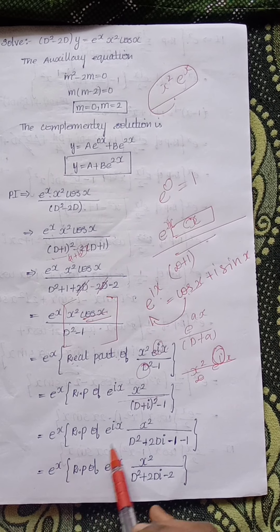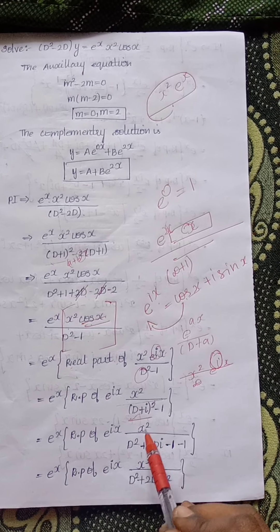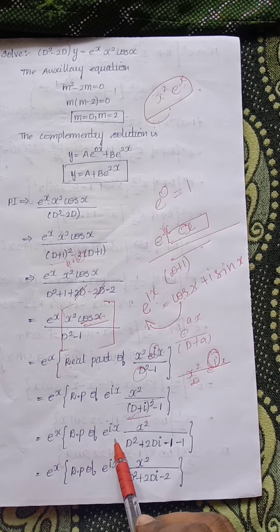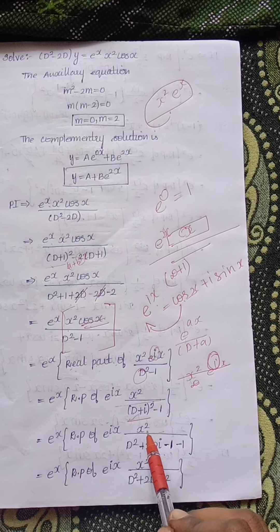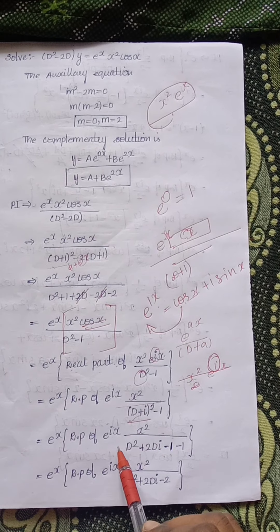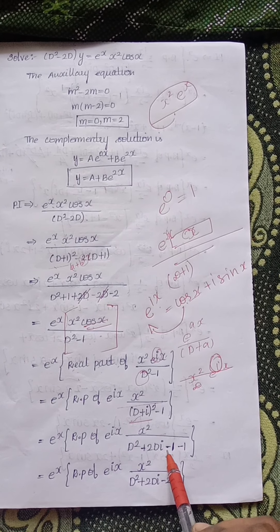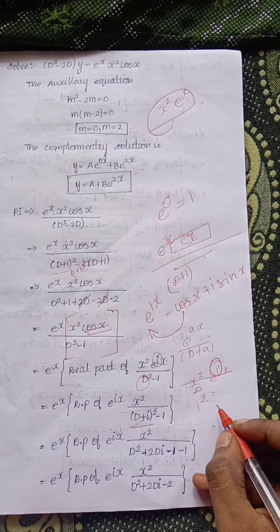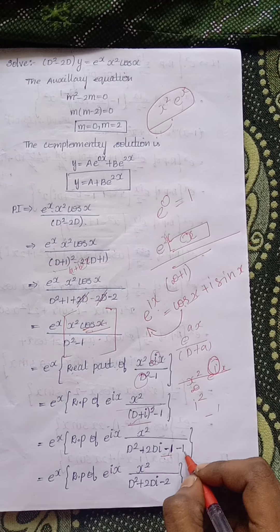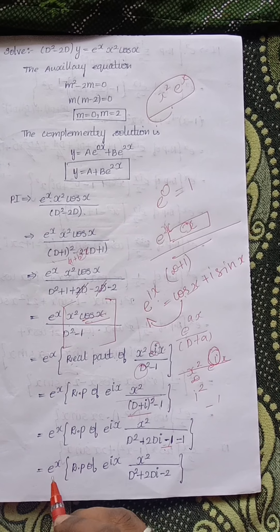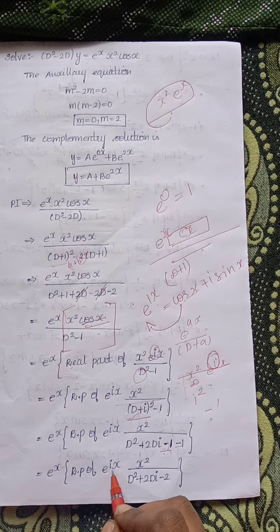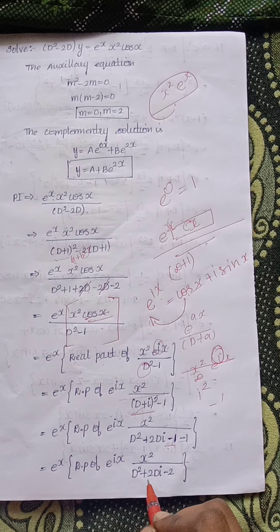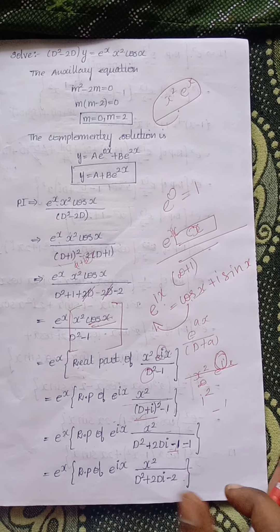Expanding (D+i)² minus 1 gives D² + 2Di + i² minus 1. Since i² equals minus 1, this becomes D² + 2Di minus 1 minus 1, that is D² + 2Di minus 2. So the expression is e^x times the real part of e^(ix) times x² divided by (D² + 2Di minus 2).